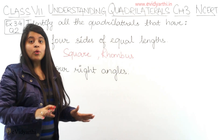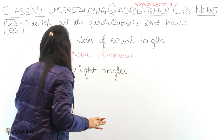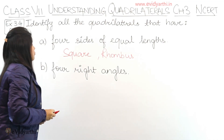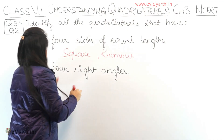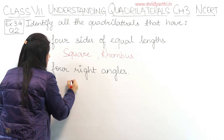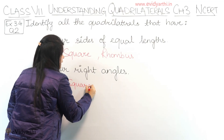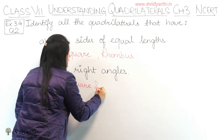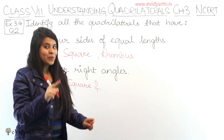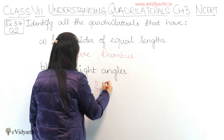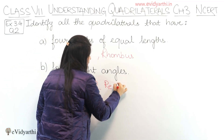So basically in this question you should know the properties. Next we have quadrilaterals with 4 right angles. Which shapes have right angles? Square has right angles, so one is square. And the other one is rectangle — rectangle also has 4 right angles. So the next one is rectangle.